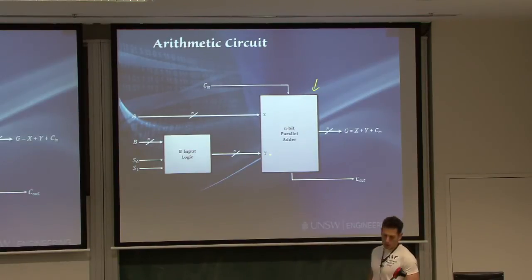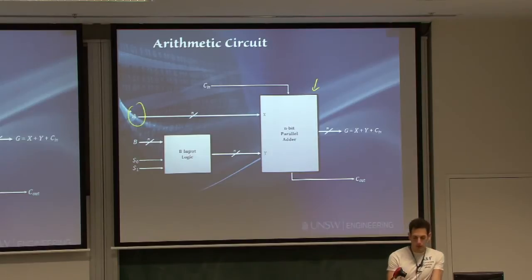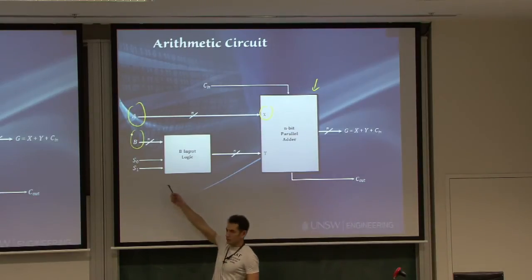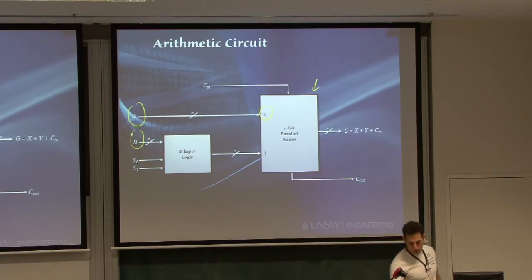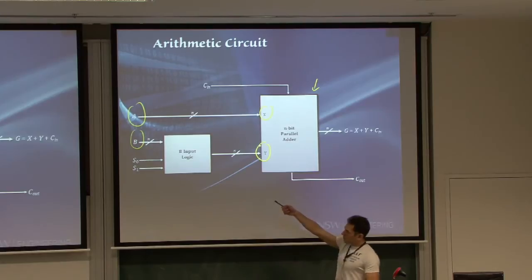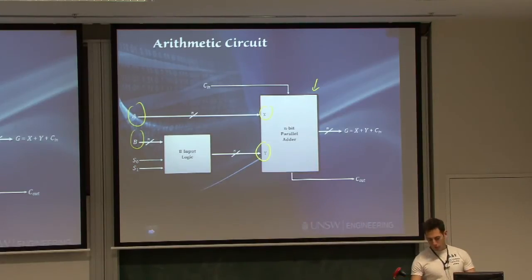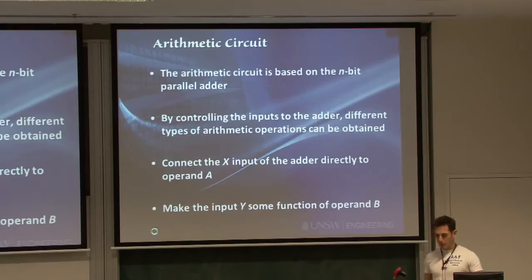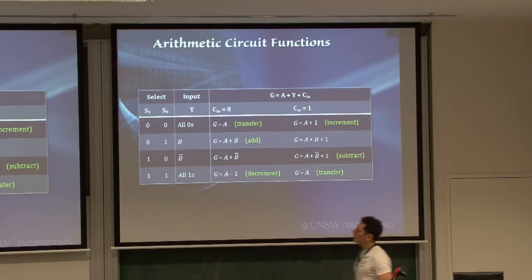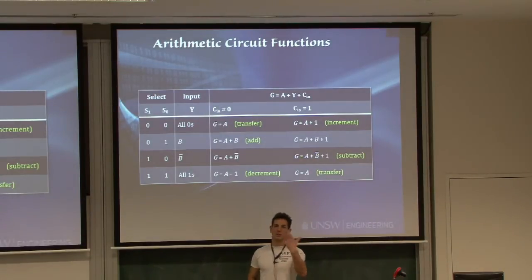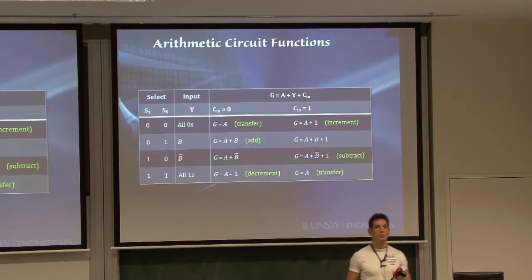The way I will approach it, I will connect the number, the data A, into my x input. And I will connect the data B through some combination of logic that will steer using S0 and S1 control lines to manipulate the second operand of the adder. Now, using two select lines, there's really four different combinations that I can make my logic do.